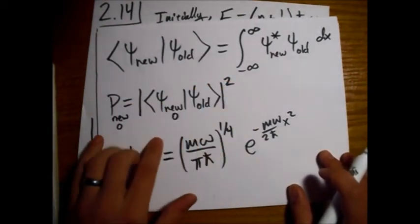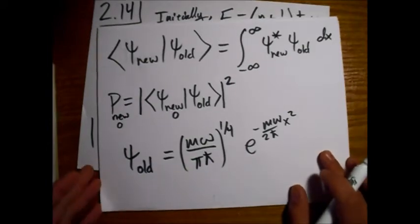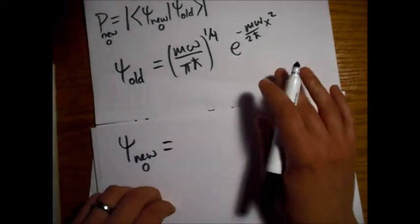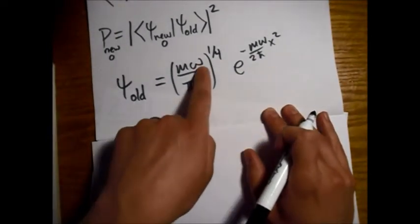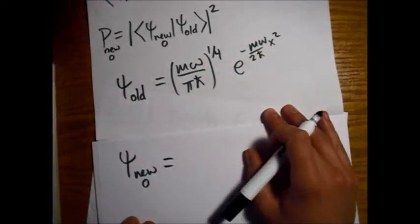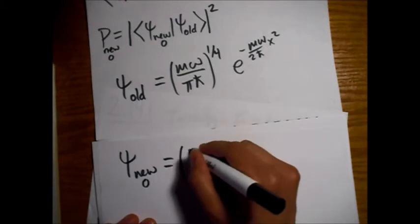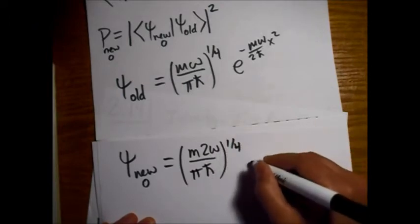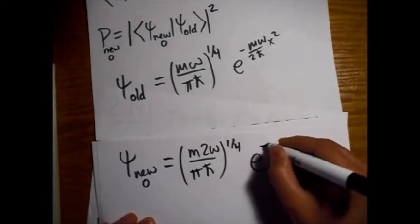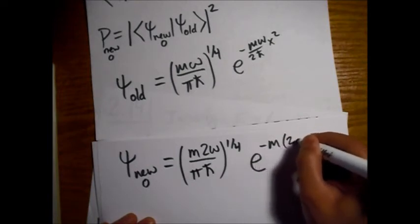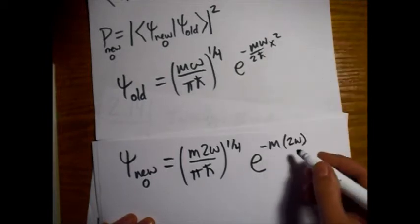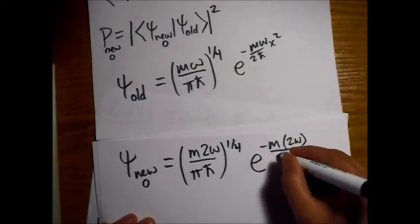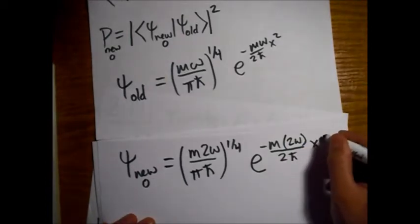So we could ask what's the probability of 3 h bar omega. And then, you know, instead of 0 here, we could put a 1 for the first excited state. And we could find, just based on this, with a 1 instead of 0, we could find the probability of getting the first excited state. But that's not what he asked. So alright, so the new ground state, right, it's going to be the same as the old ground state, except we have a 2 omega in place of these omegas.